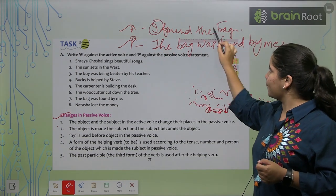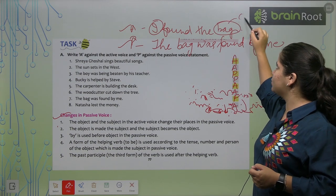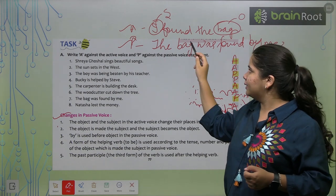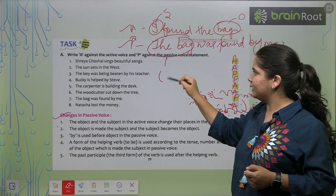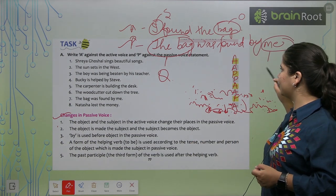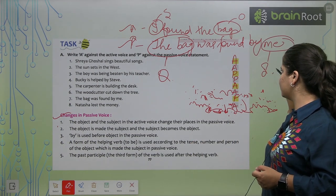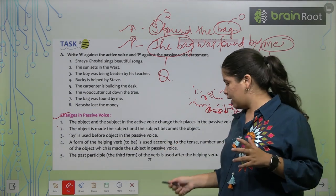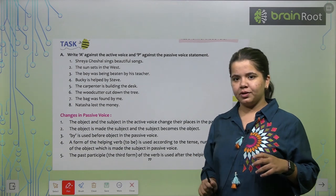So this is the subject. But in the passive voice, the bag, which is the object, came first. And our subject, me, came later. So this is the subject. So you can see that how the position has been changed.